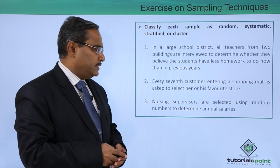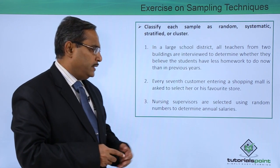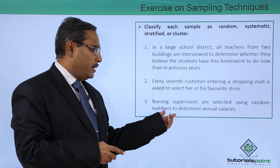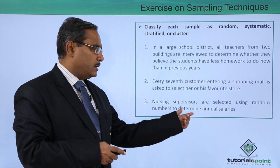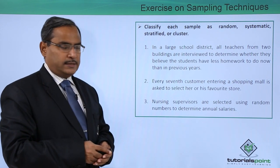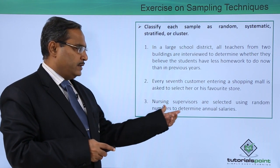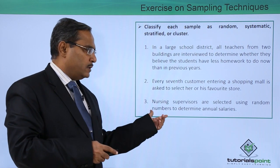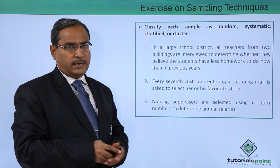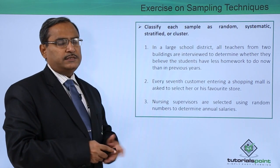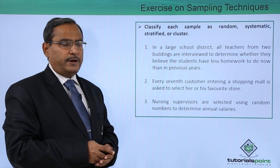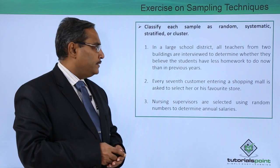Nursing supervisors are selected using random numbers to determine annual salaries. Since we are using random numbers to make the selection, obviously this is a good example of random sampling.